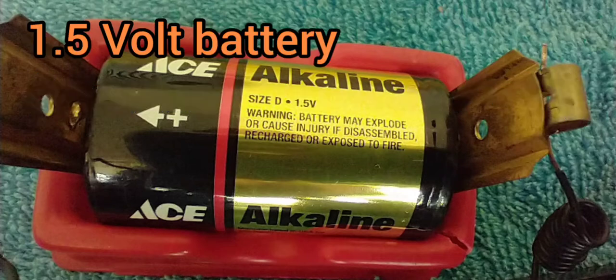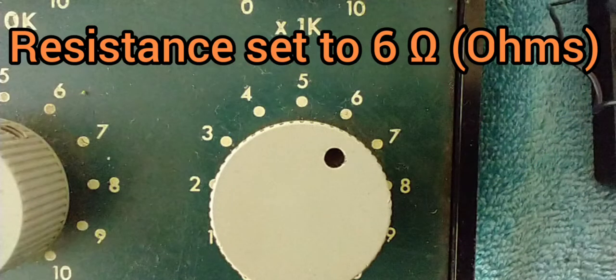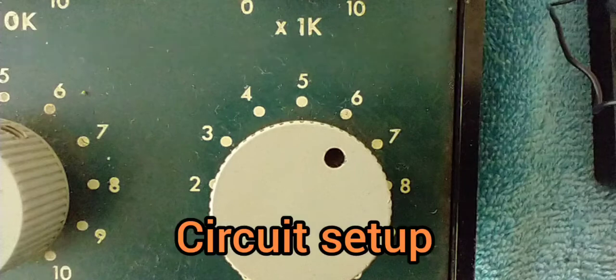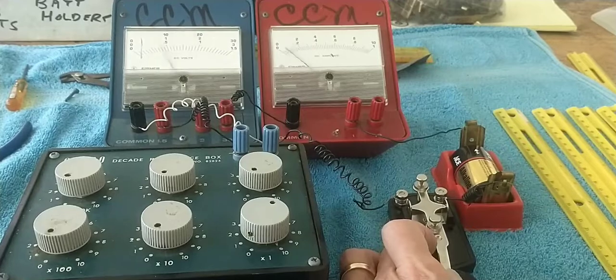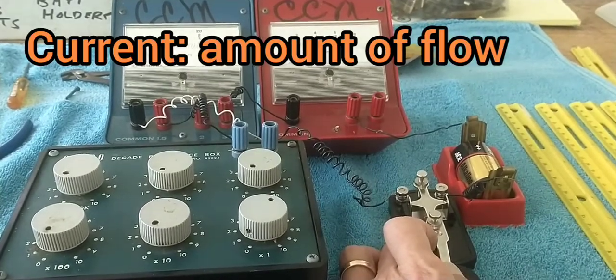I've got an alkaline battery that, when new, put out 1.5 volts. I've got a box that generates a fixed resistance of 6 ohms. And so when I close the switch, I get a current and a voltage.